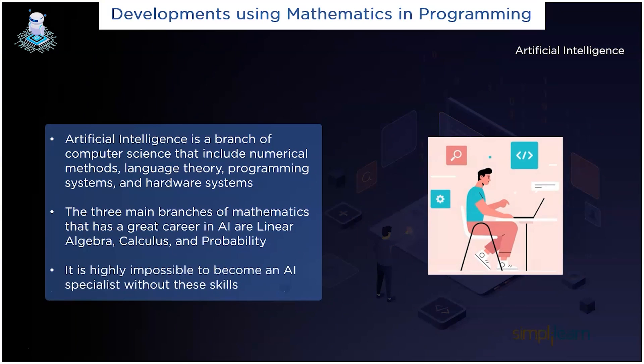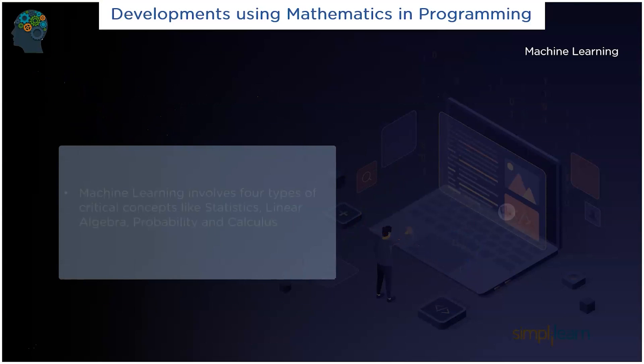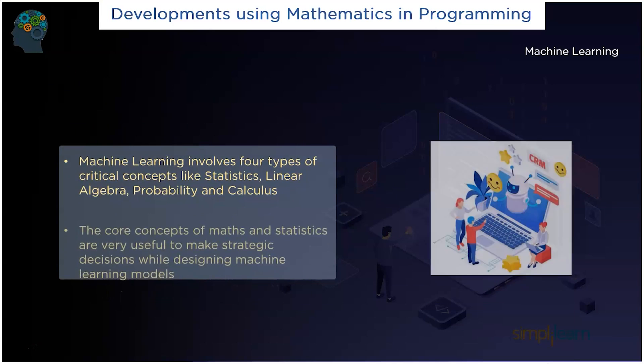The next one on the list is machine learning. Machine learning in programming involves four types of critical concepts like statistics, linear algebra, probability, and calculus. The core concepts of maths and statistics are very useful to make strategic decisions while designing machine learning models and algorithms.